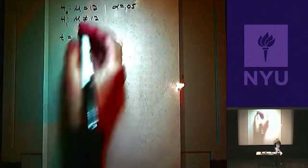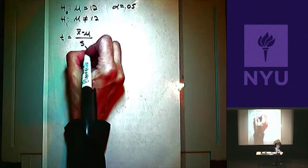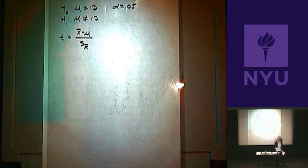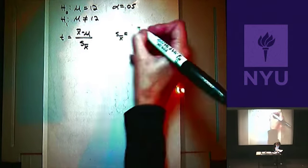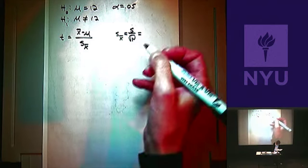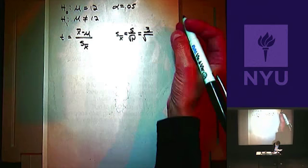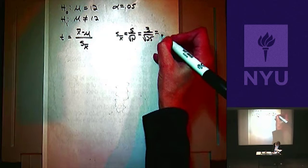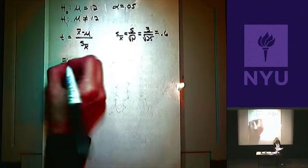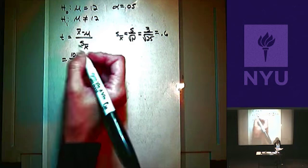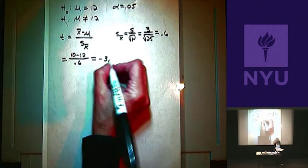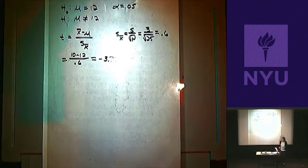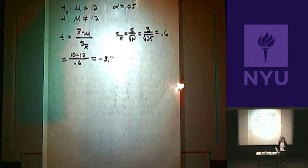The standard deviation was 3 and n was 25, so the standard error is 3 divided by the square root of 25, which equals 0.6. That gives us T equals 10 minus 12 divided by 0.6. This is essentially the same as a Z — you're taking a mean and transforming it into a T value so you know the probabilities, and then you make a decision.